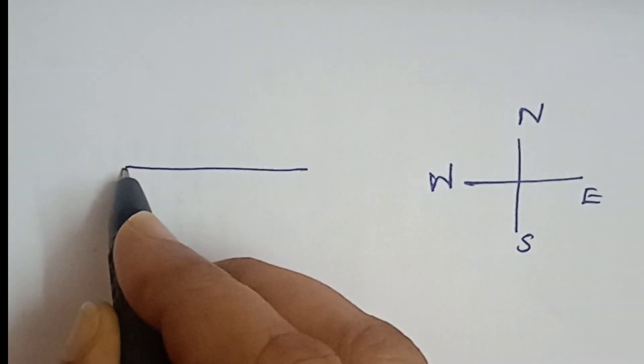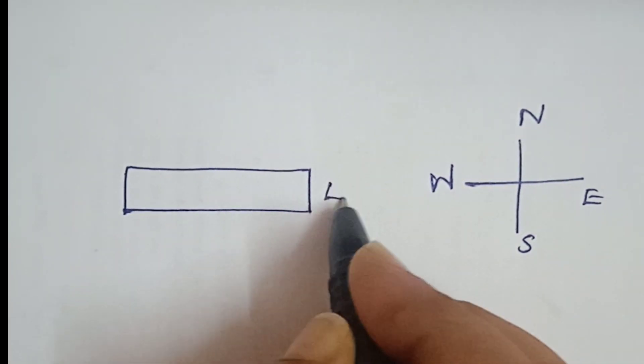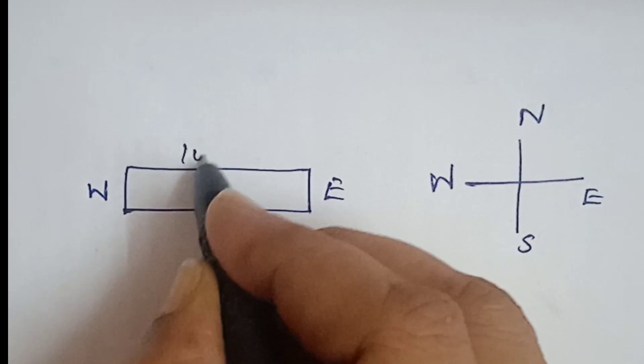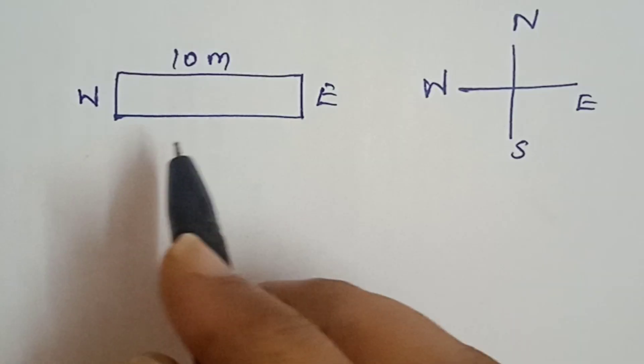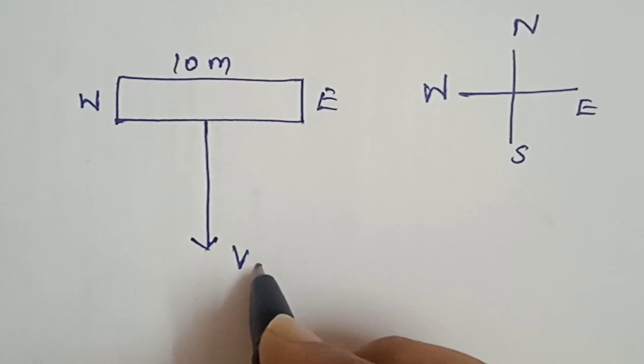What is the horizontal straight wire? 10 meter is east to west. The speed is 5 meter per second. The speed of the direction is 5 meters per second.